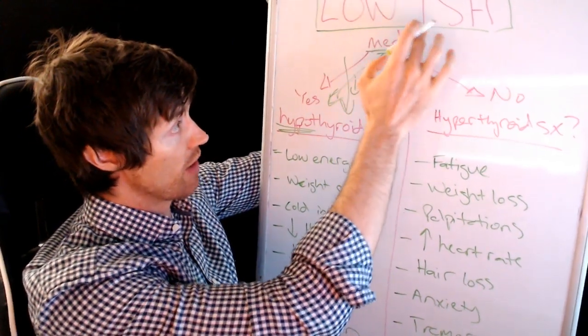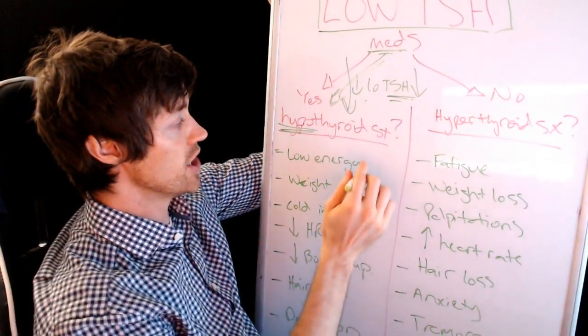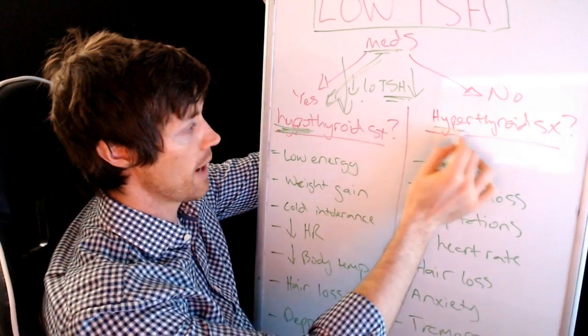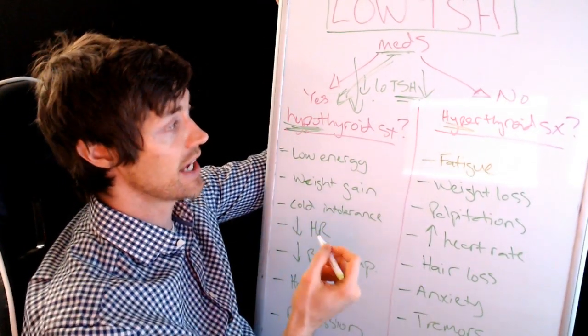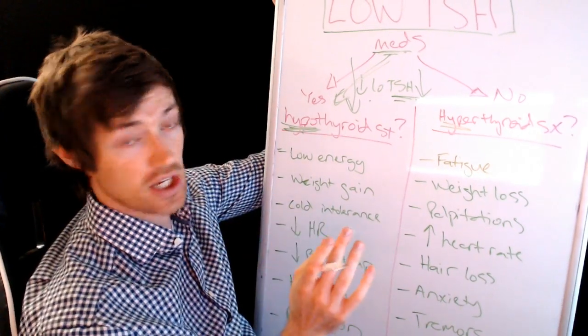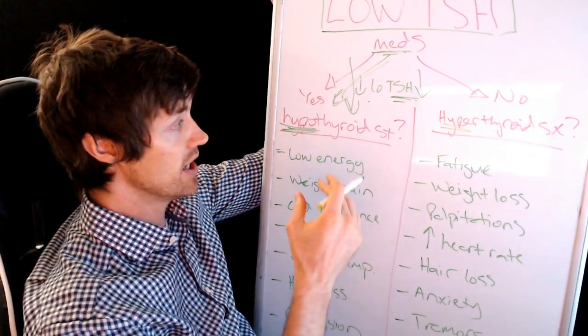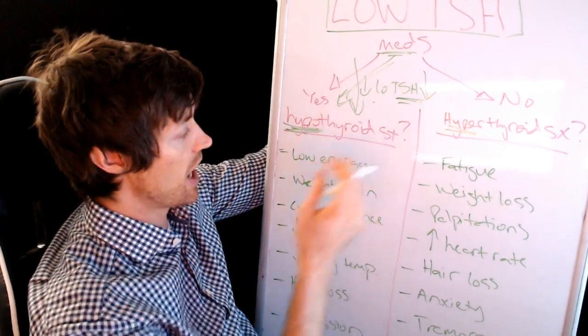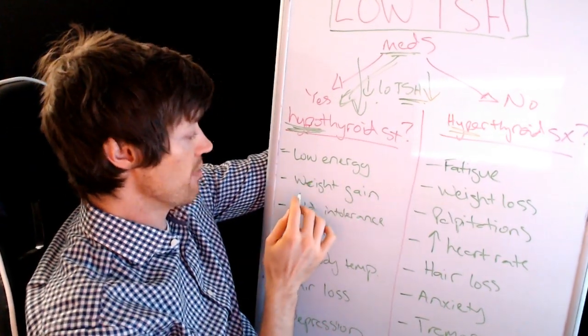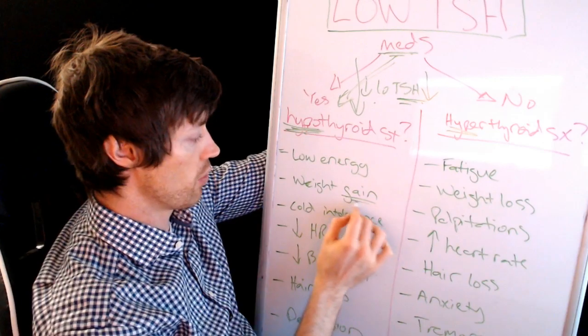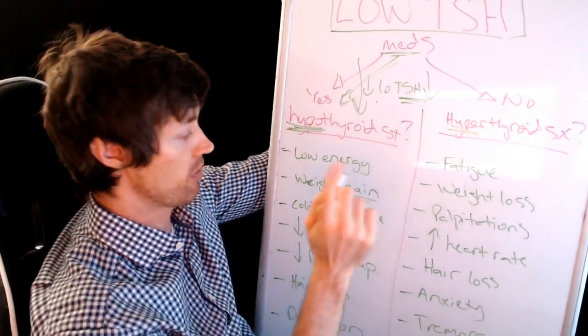So when you have a low TSH, you're on thyroid medication, you're asking yourself, do I feel hypo or hyper? If you have these symptoms and you're taking medication, it's likely that it's a problem with your medication. So these are the symptoms you can be having if the medication that you're currently taking is not working the way it should be. You might experience low energy. You might have weight gain. So gain is very important here. That helps differentiate hypothyroid from hyper.